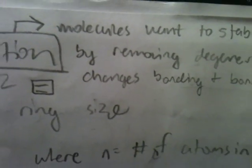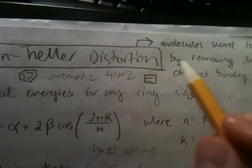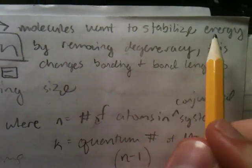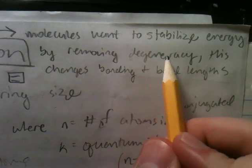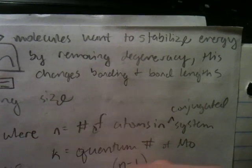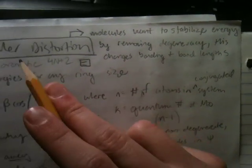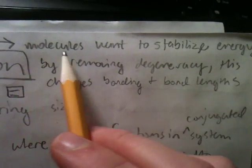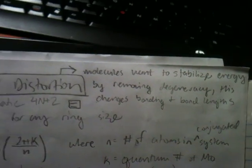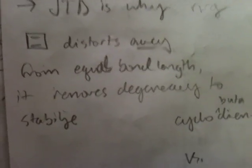What happens is Jahn-Teller distortion: molecules want to stabilize their energy by removing degeneracy, and this changes the bonding and bond lengths. So the concept of Jahn-Teller distortion is that molecules want to stabilize their energy by removing degeneracy, which will change bonding and bond lengths.